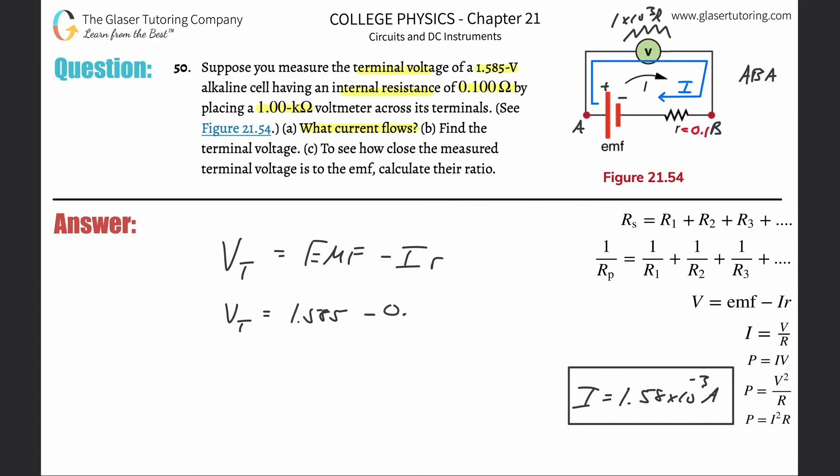times the current—I should have had the current first—times I, which we just found was 1.58 × 10⁻³, multiplied by that internal resistance of 0.1. Obviously, you see what's going to happen here: 1.585 minus that exact value multiplied by 0.1. Considering the rounding, we would round this to 1.585 in terms of sig figs. This is going to be in terms of volts.